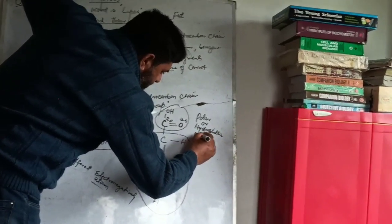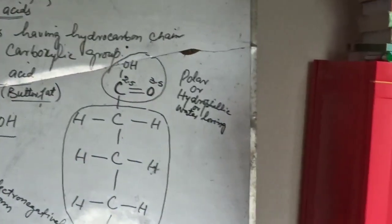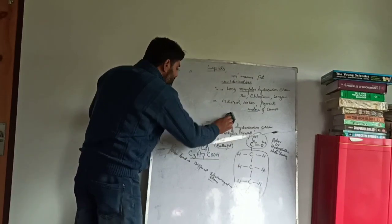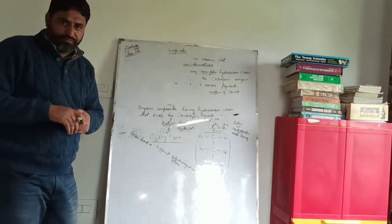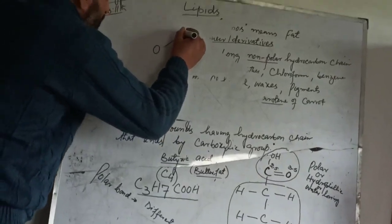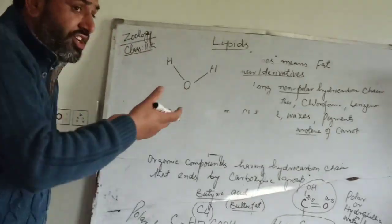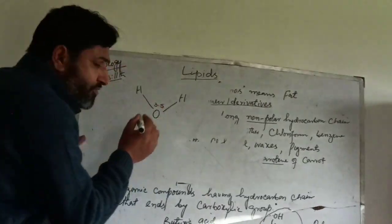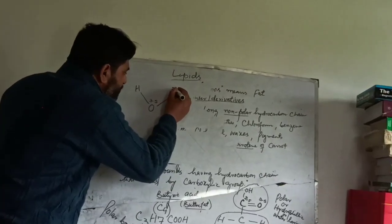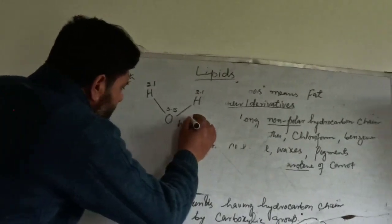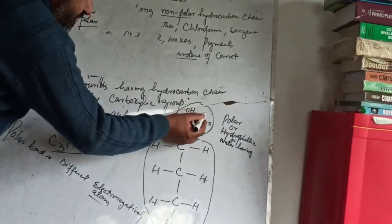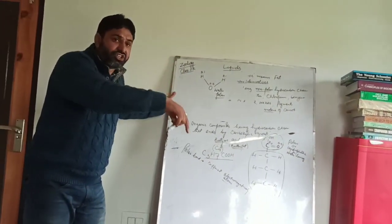Hydrophilic means water-loving - that means it dissolves in water. Why does it dissolve in water? Because water is itself polar. If we take H2O, the bond is between oxygen and two hydrogen atoms - that is between two different atoms. Oxygen has electronegativity 3.5, on the other hand hydrogen has electronegativity 2.1. So the water molecule is also polar, and polar dissolves in polar. That is why the carboxylic group of the fatty acid is polar and water-loving - it dissolves in water.